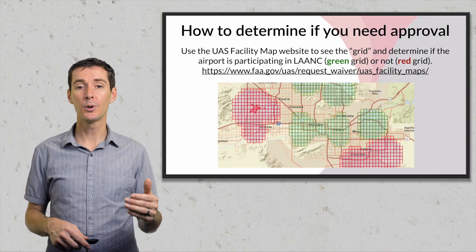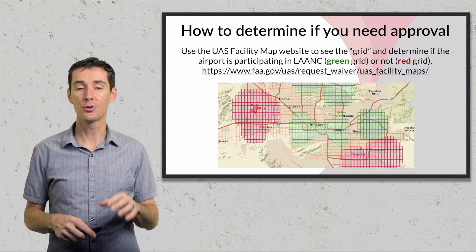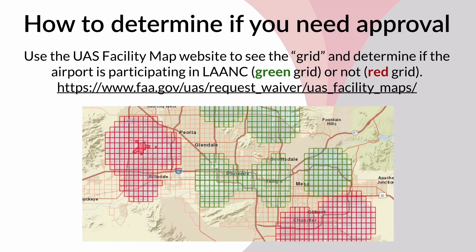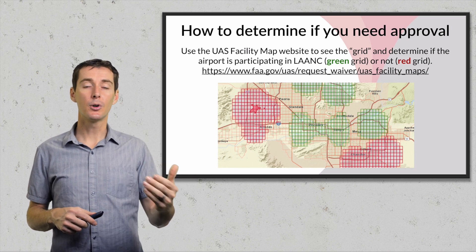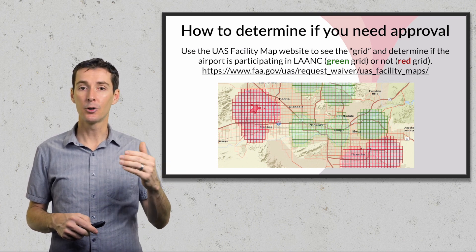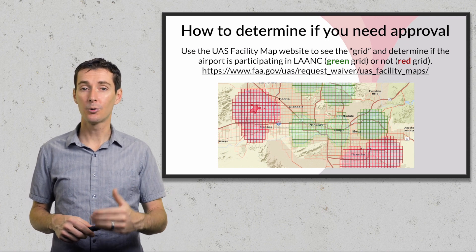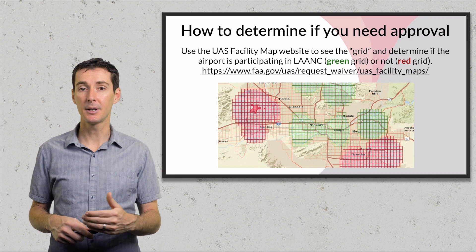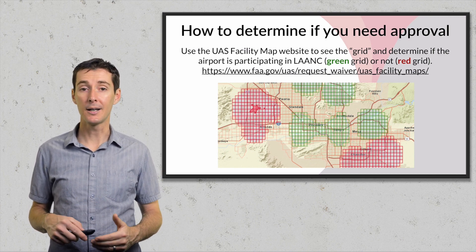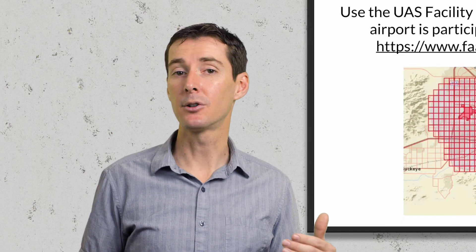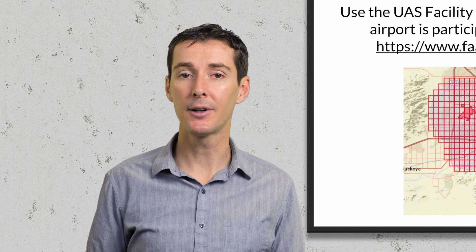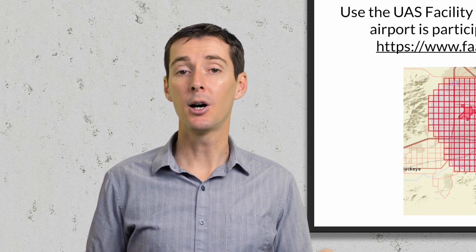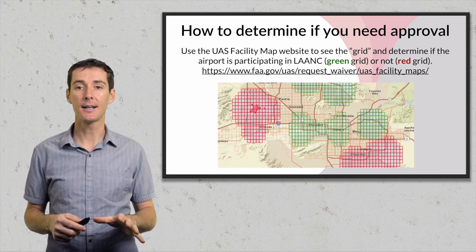To find out which airports are in LAANC and which are not, you can go to a page you should bookmark called the UAS Facility Map. The facility map is a grid around an airport that tells you how high you can fly in each area. When you go on that facility map, you'll see grids that are green and grids that are red. The green grid means the airport participates in LAANC — you can go online and submit approval to fly immediately. If the grid is red, the airport is not part of LAANC, meaning you need to go to the FAA Drone Zone website and wait up to 90 days.